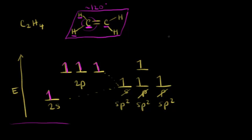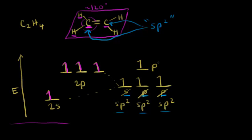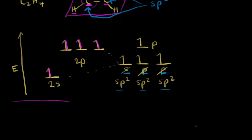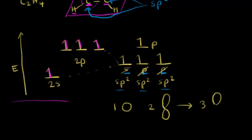This is called sp2 hybridization because we're using one s orbital and two p orbitals to form our new hybrid orbitals. This carbon is sp2 hybridized, and the same with the other carbon. Notice that we left a p orbital untouched — one unhybridized p orbital. In terms of the shape of our new hybrid orbital, we're taking one s orbital (shaped like a sphere) and two p orbitals (shaped like dumbbells) and hybridizing them to form three sp2 hybrid orbitals. They have a bigger front lobe and a smaller back lobe; when we draw pictures, we ignore the smaller back lobe.